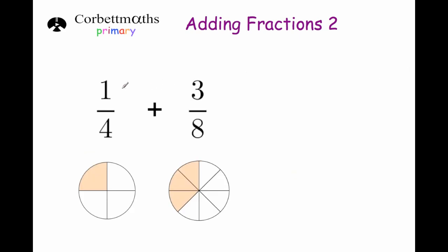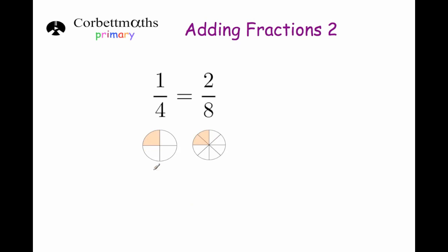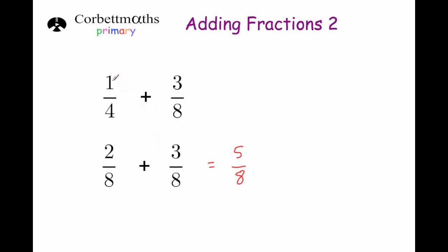Let's go back to our example. Adding a quarter plus three eighths is a bit harder because the denominators are different, so we're going to consider equivalent fractions. If you take a quarter and multiply both the numerator and the denominator by two, one times two is two and four times two is eight — so a quarter is the same as two eighths. Now we can just add them together easily: two eighths plus three eighths equals five eighths. And that's it.